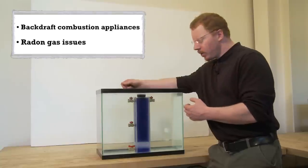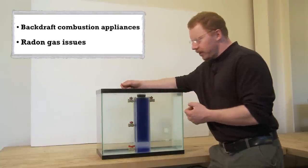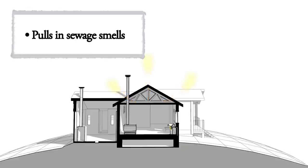Another good example of stack effect at work when you've got too much air leakage out the top is when you're bringing in sewer smells because a trap has dried up. When stack effect can't get enough air from other places, it's drawing it through the plumbing system, bringing that sewage smell into the house.